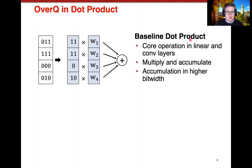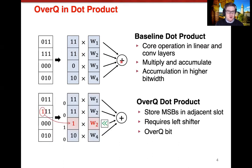Now I will discuss overQ within a dot product. This is a baseline dot product, the core operation for both linear and convolutional layers and a bunch of other linear operators. It is a simple pairwise multiply and accumulate process. First, the activations come in from the previous layer and these activations are accumulated in a higher bit width. They are then passed to the current layer where they have to be truncated down to fit within the bit width constraints of the multiplier, and then they're multiplied together and accumulated.